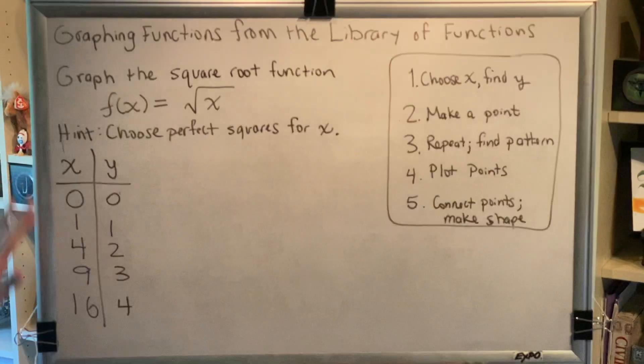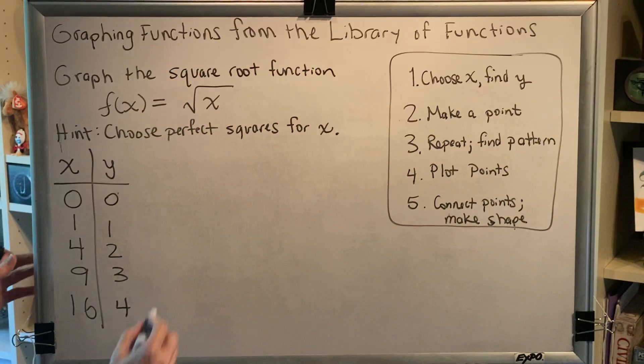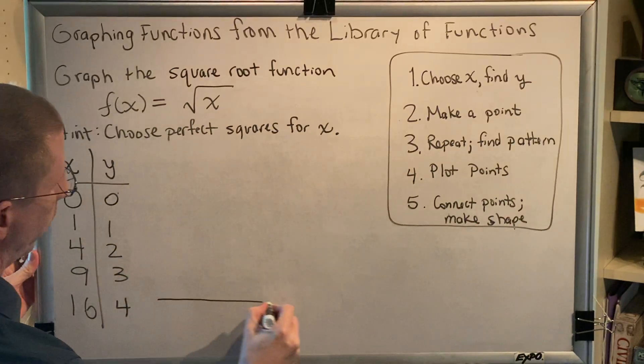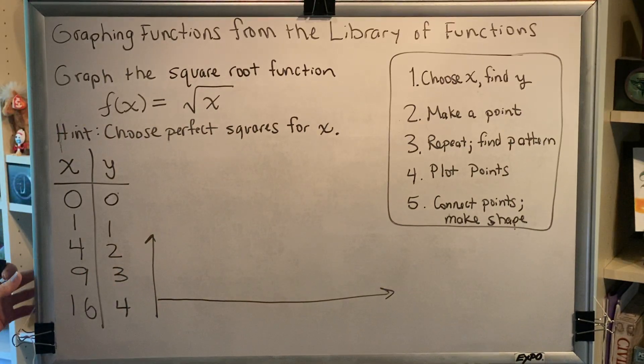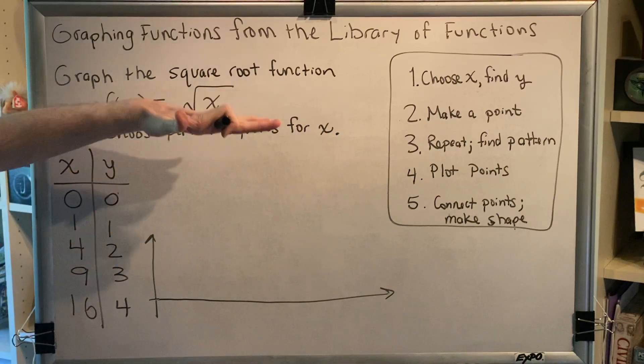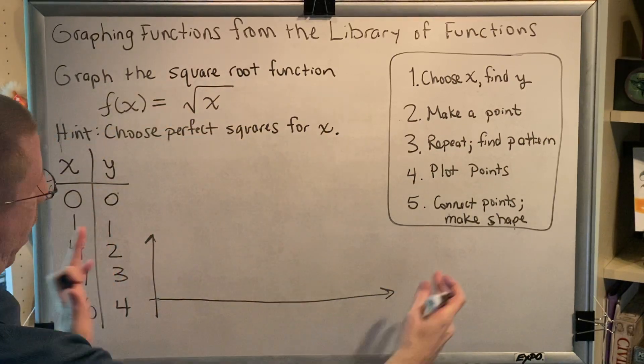Notice, there are no negative values, which means we will only need quadrant 1 of our graph. And, our graph goes all the way out to an x value of 16. So this is going to be a very short, very wide graph.